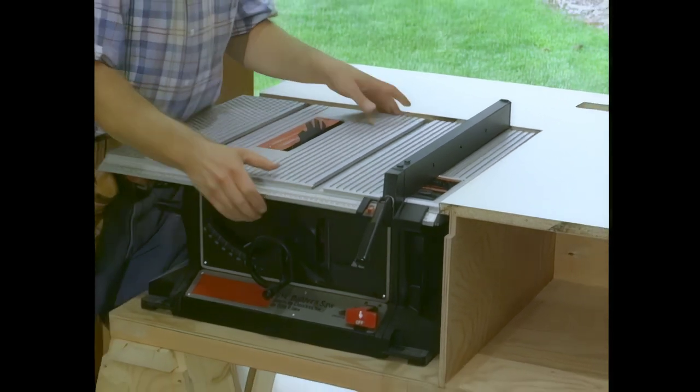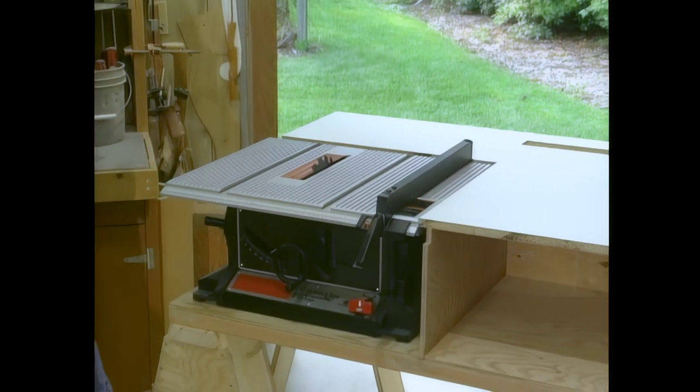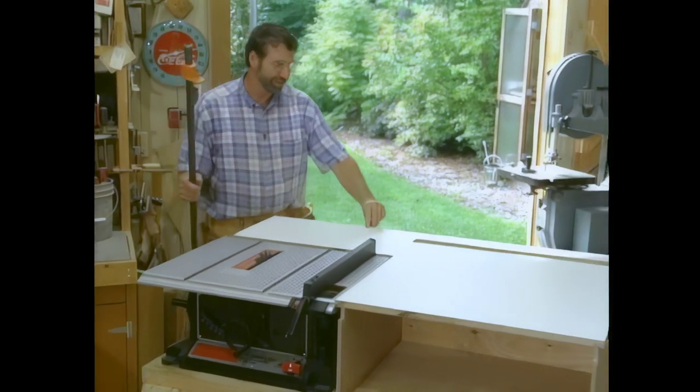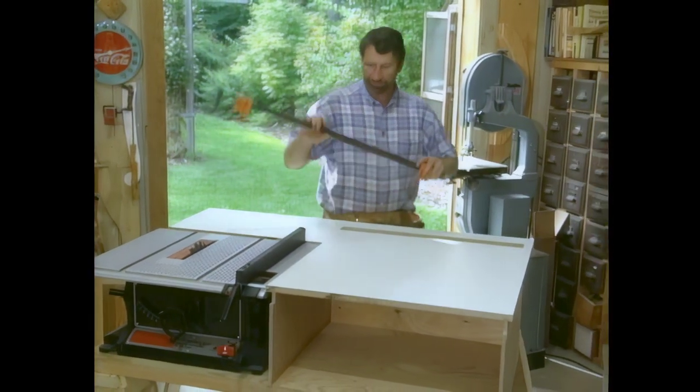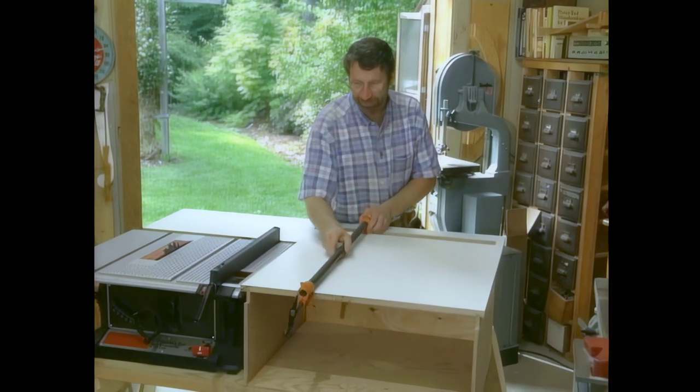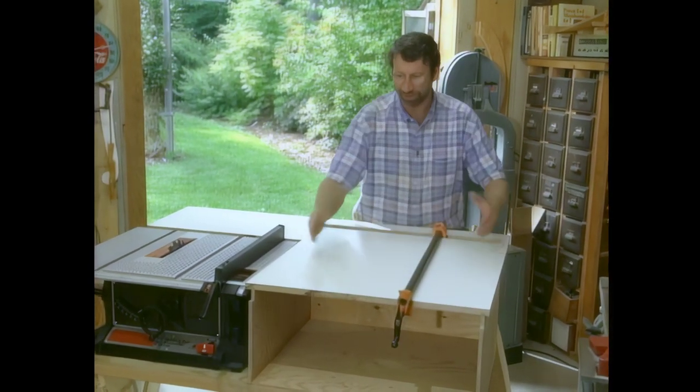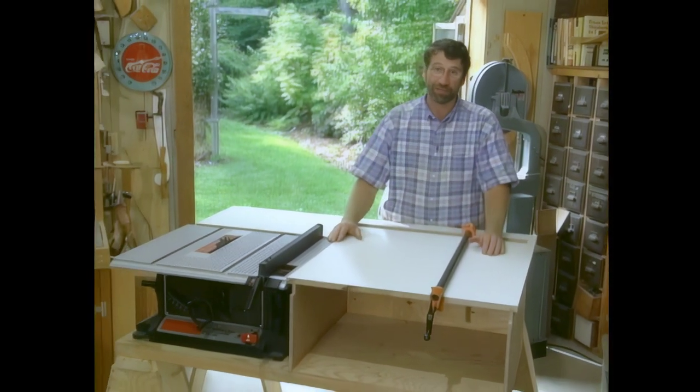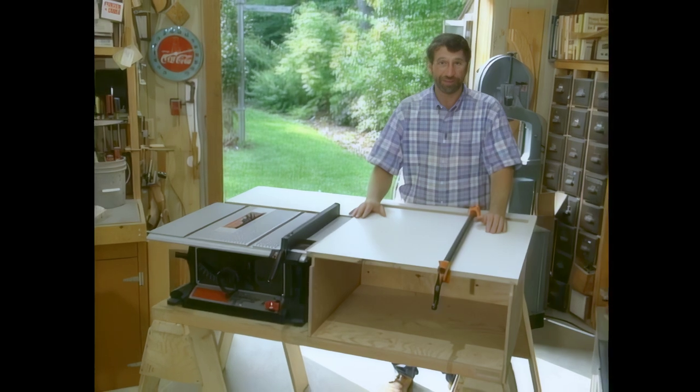Well now we can begin to see our saw station come together. Now tomorrow we'll wrap the exposed edges of the melamine with some hardwood. Then we'll make an auxiliary fence using a pipe clamp like this so that we can make full use of this extension table. And I'm hoping that we'll have enough time to make some accessories for this saw station.